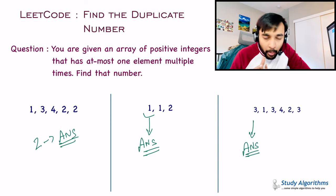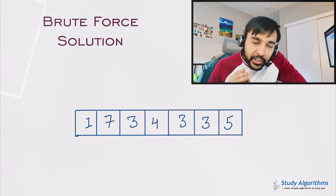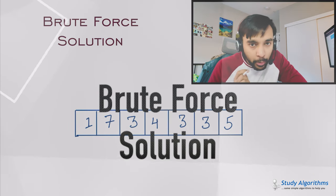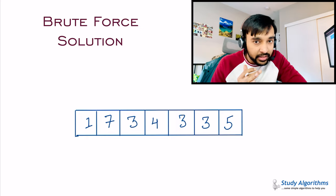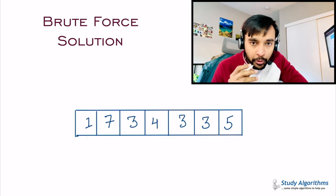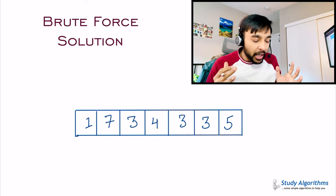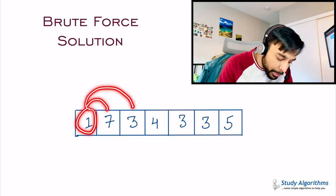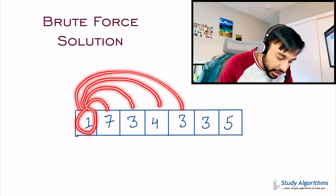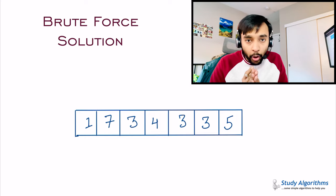If this problem statement is now clear to you, feel free to try it out on your own. Otherwise, let us look at some solutions. First of all, let us try to come up with a brute force solution, since it can guarantee that a solution to the problem exists. When it comes to a brute force solution, you need to find the duplicate number. What you can do is start with the first number and check if it is repeated throughout the array. If you cannot find it anywhere else, then the digit is not repeated.